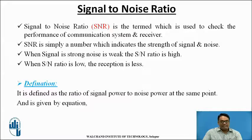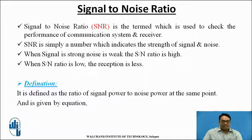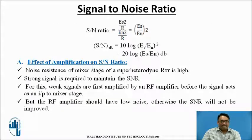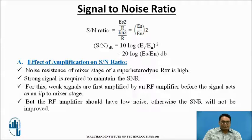Signal to noise ratio is a term used to check the performance of a communication system and receiver. It is a number which indicates the strength of signal relative to noise. When signal is strong, noise is weak and SNR is high; when SNR is low, reception at the receiving side is poor. SNR is defined as the ratio of signal power to noise power, given by (Es/En)². In decibels: S/N dB = 20 log(Es/En).